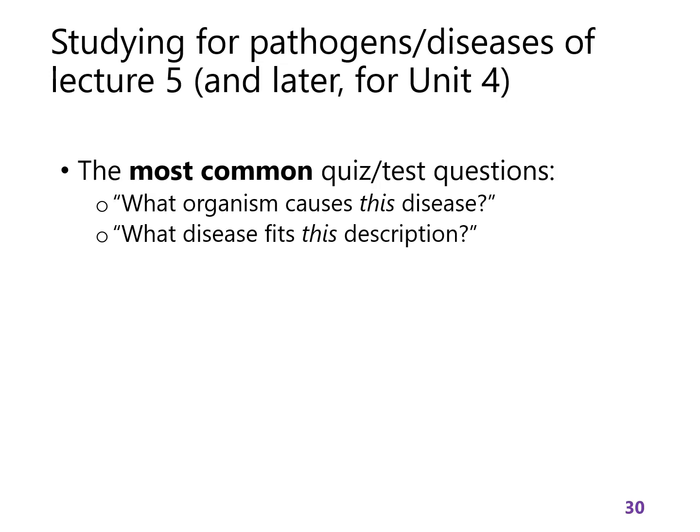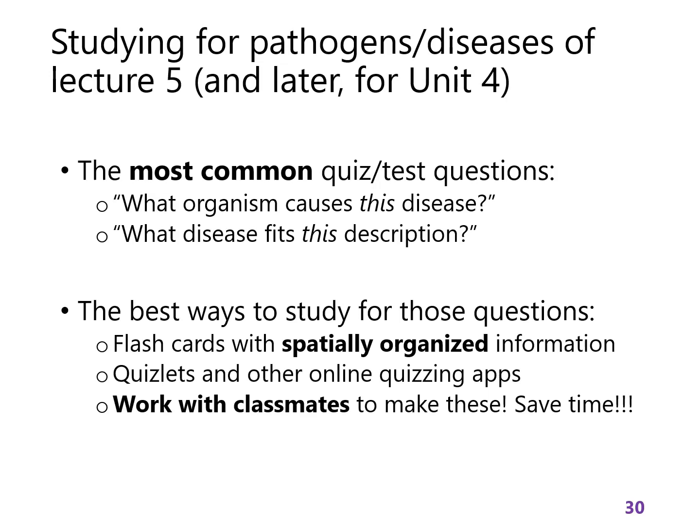More important are going to be the questions where I describe a disease — I'll give you symptoms, some other information about it like where it occurs in the world, what the risk factors are, things like that — and then you'll tell me what disease it is. The best way to study for these questions is to do a lot of memorization using flashcards that are spatially organized, and I'll explain that in a second. What you're looking for is as much information as you can retain about every disease so that when you hear them described you can remember what they are.